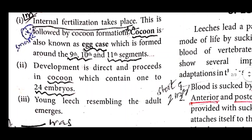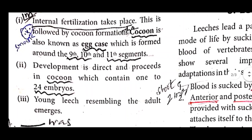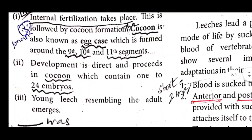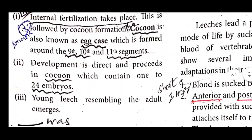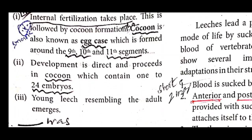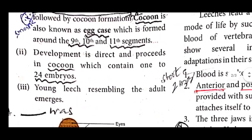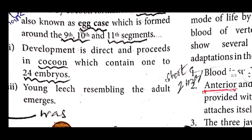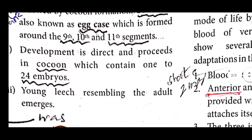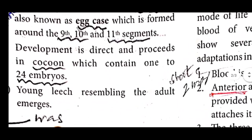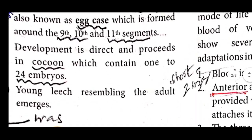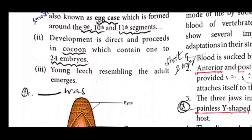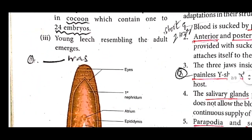The development is direct and produced in a cocoon, which contains 1 to 24 embryos. The young leech resembles the adult when it emerges from the cocoon.